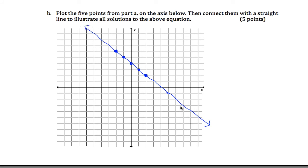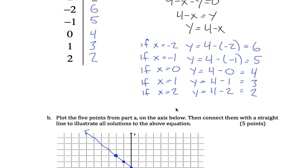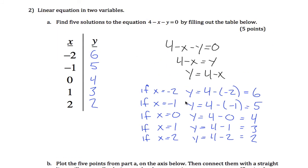I end up with something like this. What this line represents is all of the solutions, not just five of them, but every solution to this equation. And that's the end of the quiz.